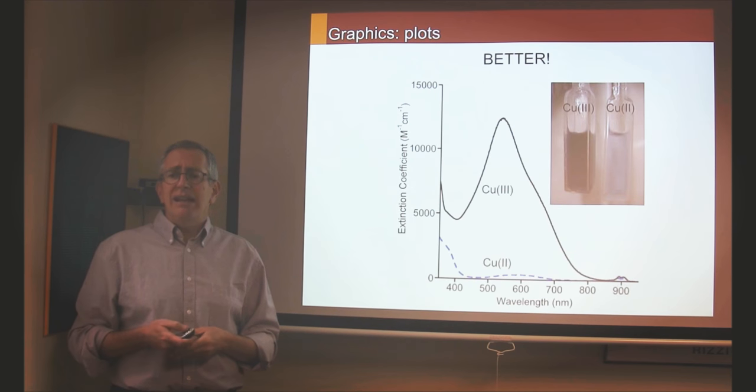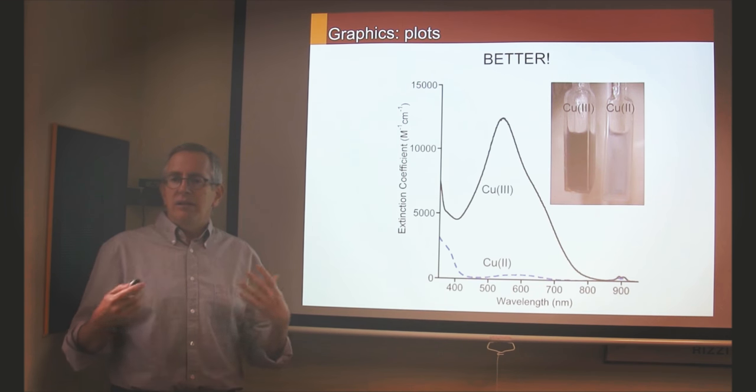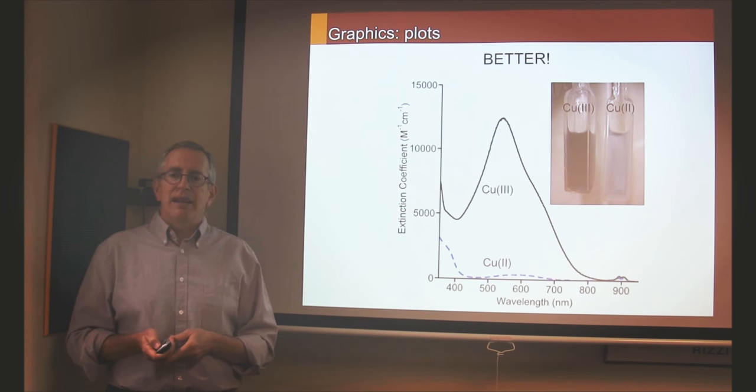This similar data can be presented in a much clearer way. And here's an example of data being presented in a much clearer way using a photograph to show the colors of the two different compounds, the two different UV-Vis spectra with the axes, with clear, large font labeling. It's much easier to follow and understand this spectrum than the ones you saw in the previous slide.